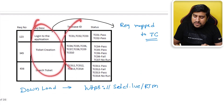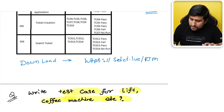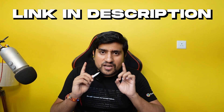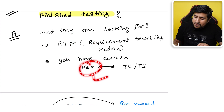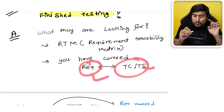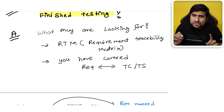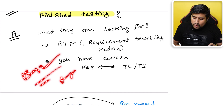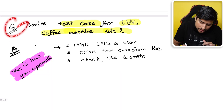What they are looking for is your Requirement Traceability Matrix — RTM. Your mapping of requirements to test cases should be complete. You have covered most scenarios, every requirement is mapped to a test scenario, bugs are resolved, and you know what bugs remain and are going live with those. That's when testing should finish.